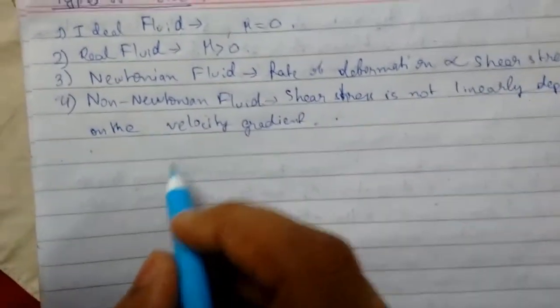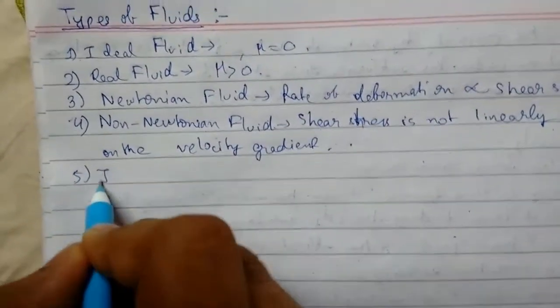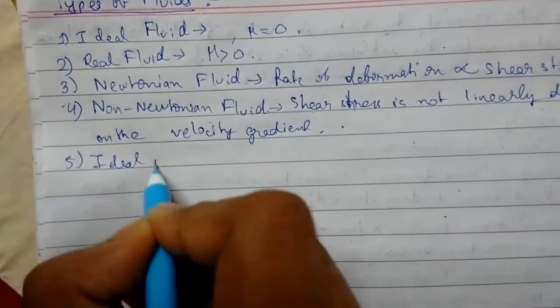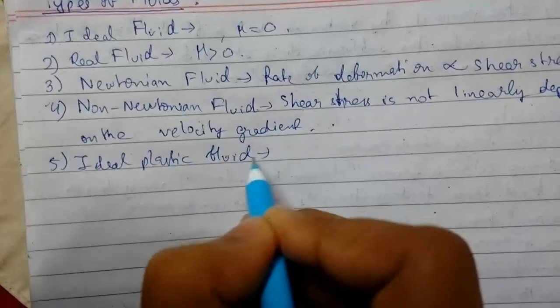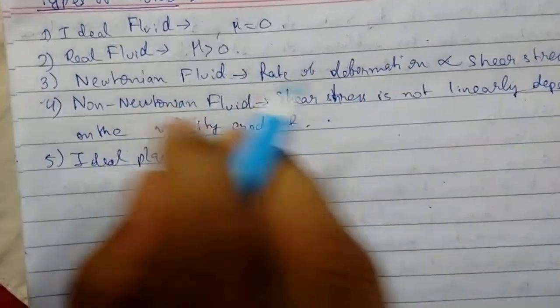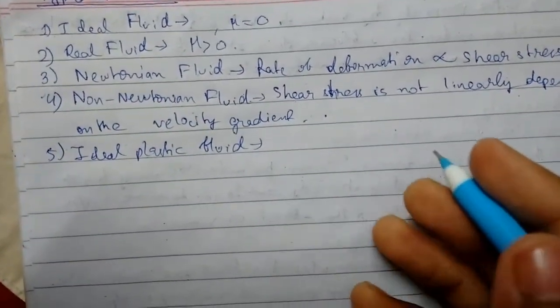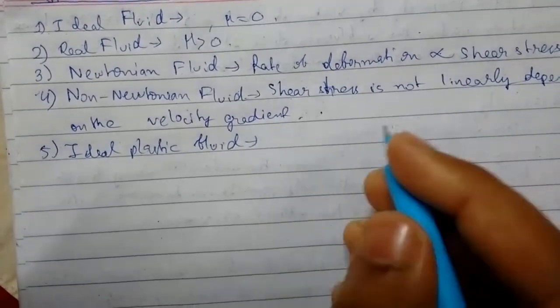Next we have ideal plastic fluid. So a fluid in which shear stress is more than the yield value and the shear stress is proportional to the shear strain.